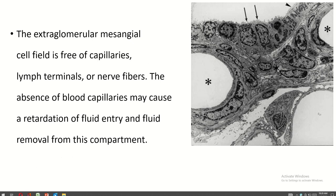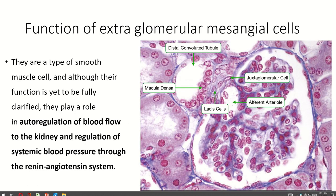The extraglomerular mesangial cell field is free of capillaries, lymph terminals, and nerve fibres. The absence of capillaries may cause a retardation of fluid entry and fluid removal from this compartment. The function of the extraglomerular mesangial cells: they are a type of smooth muscle cell, and although their function is yet to be fully clarified, they play a role in autoregulation of blood flow to the kidney and regulation of systemic blood pressure through the renin-angiotensin system.